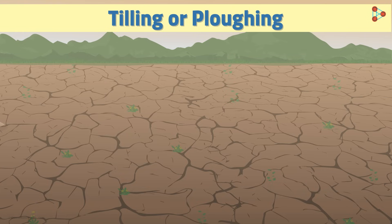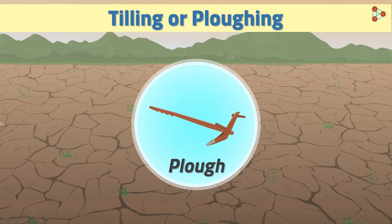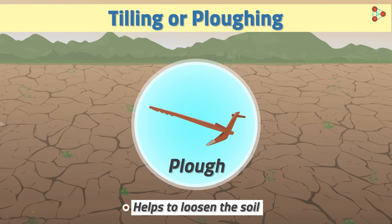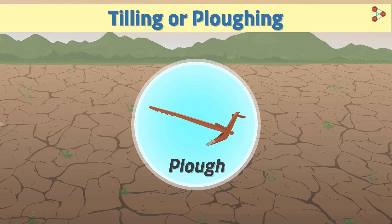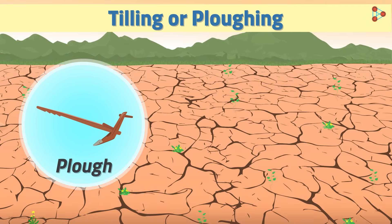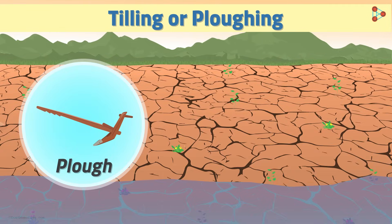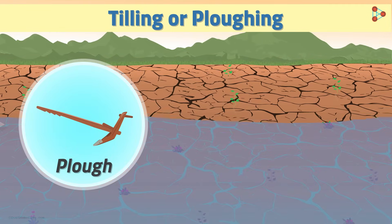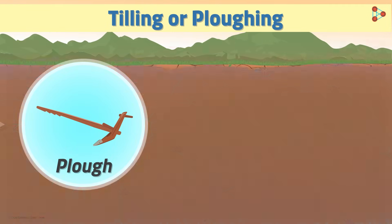How is tilling and ploughing done by man? Have you heard of equipment called a plough? It helps to loosen the soil. But what if the soil is hard — would it be easy to plough? No, it won't be. Hence, the soil may have to be watered before ploughing.